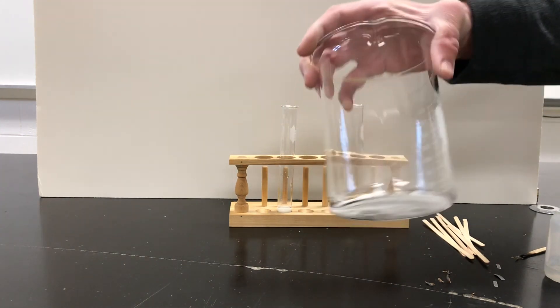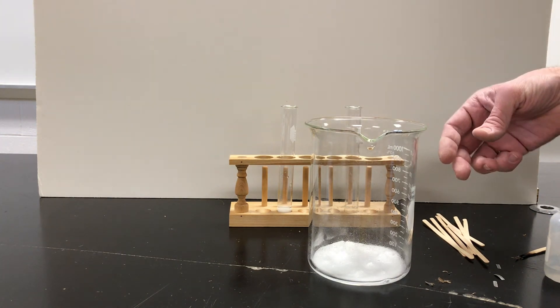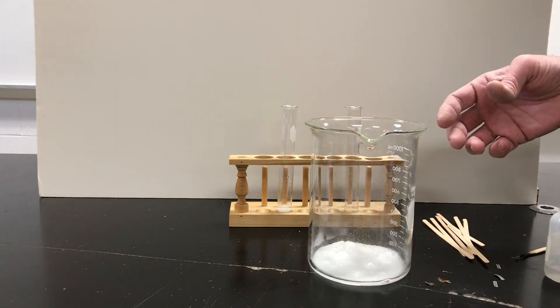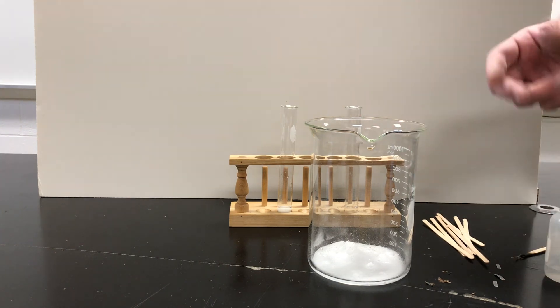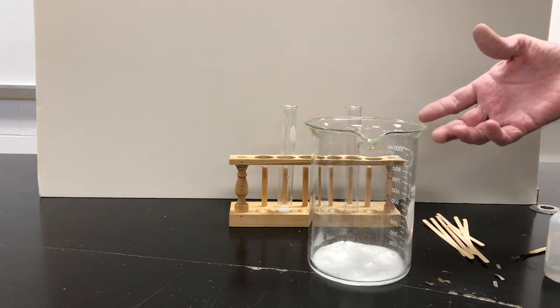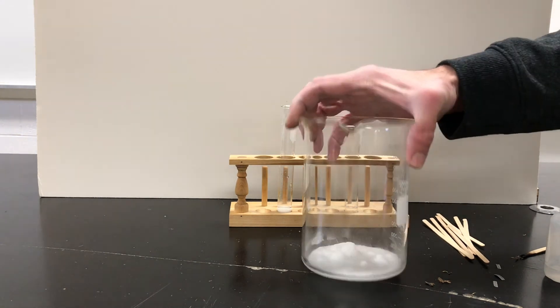There used to be old style fire extinguishers, carbon dioxide fire extinguishers, which just fill the area with carbon dioxide and put out a fire because it pushes the oxygen out of the way. So when you have a burning splint test and it goes out, probably carbon dioxide gas given off.